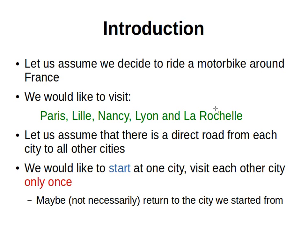We're going to assume that there is a direct road from each city to all other cities, so all five cities are interconnected — I'll show you a drawing of that. The way we want to visit these cities is by starting at one city and then visiting each other city only once. For example, we start at Nancy, then go to La Rochelle, from La Rochelle to Lyon, from Lyon to Paris, and from Paris to Lille. That's one possible route — we visit each city once and only once.